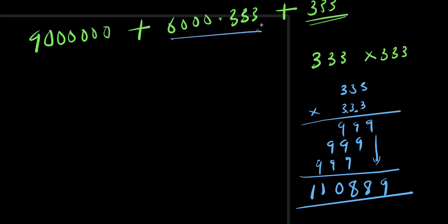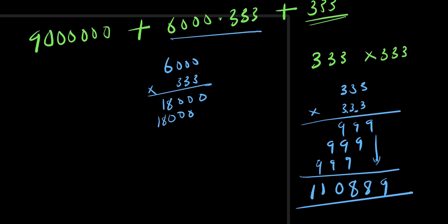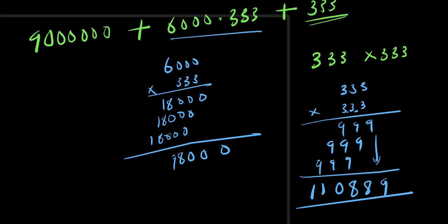Now let's compute 6000 times 3333. Setting up the long multiplication: 3333 times 6 gives 18 for the leading digit with zeros filling the rest from the three zero digits of 6000. Adding up the partial products gives 19,998,000.